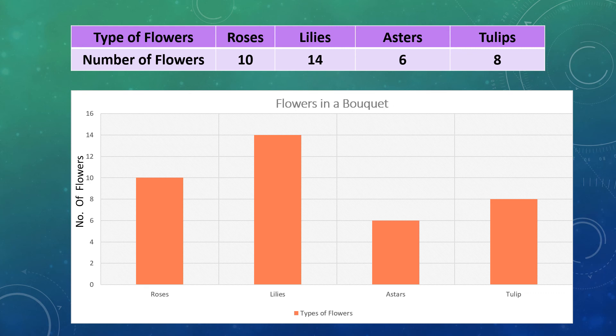After that, take an interval of 2 on the y-axis. Therefore, the numbers are 0, 2, 4, 6, 8, and so on on the y-axis. Now, bars can be drawn by looking at the above data.